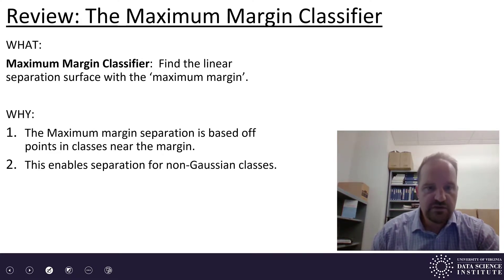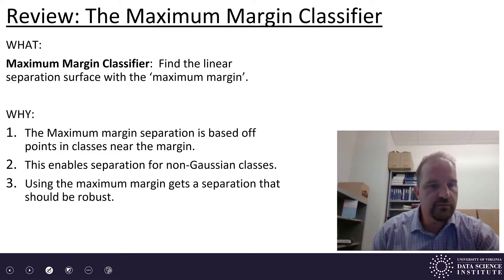This enables separation for non-Gaussian classes. If my data classes were each Gaussian distributions, I would just use LDA. That's going to give you something as very close to the Bayes optimal separation surface, and it's hard to beat for things that are Gaussian. But for non-Gaussian, maximum margin classifier provides potential benefit.